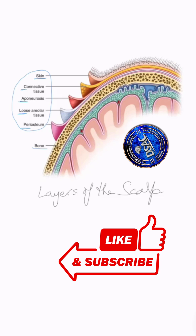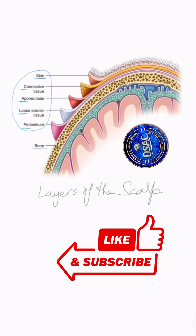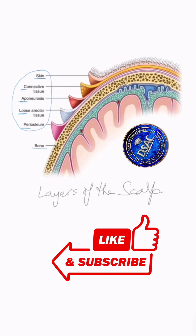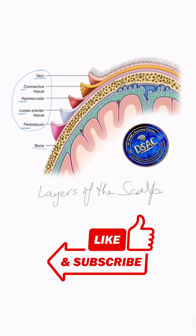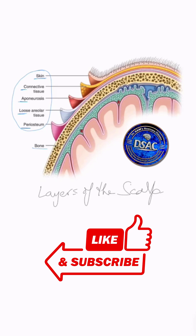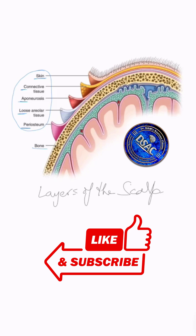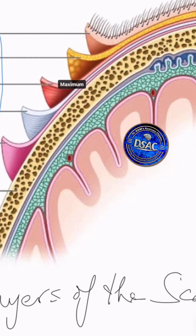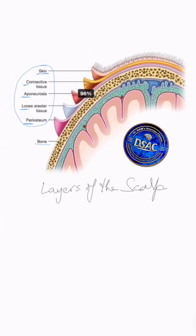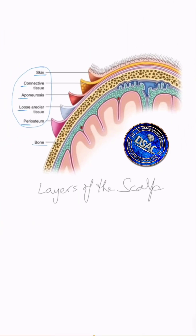Blood vessels are running in the subarachnoid space. Remember that the subarachnoid space is a trabeculated space — so observe carefully, the subarachnoid space is a trabeculated space.